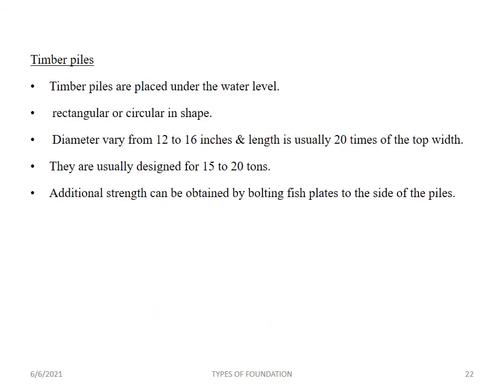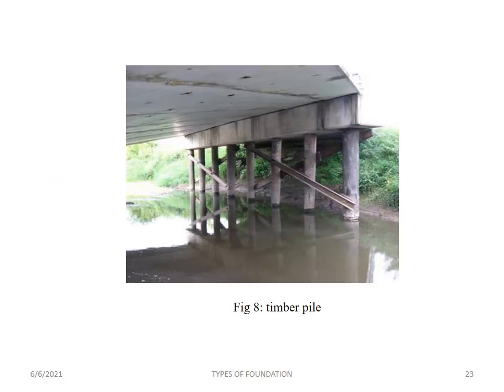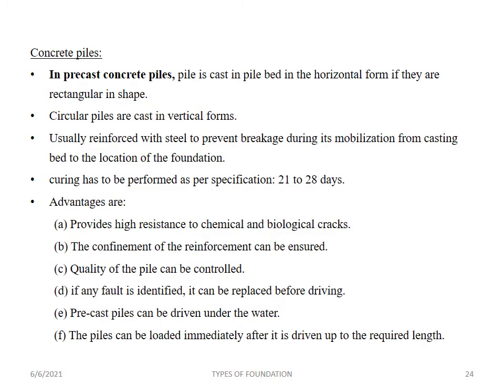Timber piles are placed under the water level. The shape of the timber pile is rectangular or circular, with diameter varying from 12 to 16 inches and length usually 20 times the top width. They are designed for loads of 14 to 20 tons. For additional strength, bolting fish plates can be provided to the sides.